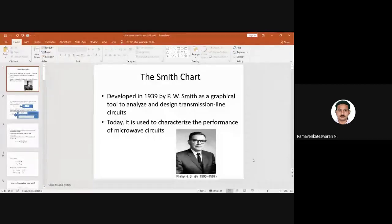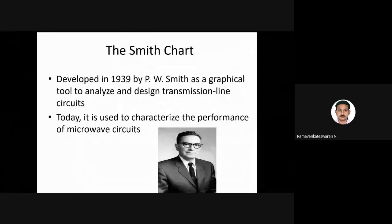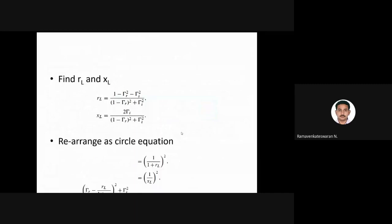As mentioned earlier, this is Philip Smith who developed this chart. It is used in transmission line problems. In the last class we saw how to construct the Smith chart using circle equations. There are two circle equations: one is a resistance circle and one is a reactance circle. The first is called the resistance circle because it involves RL — the load resistance. The second is called the reactance circle where the reactance of the load XL is used.